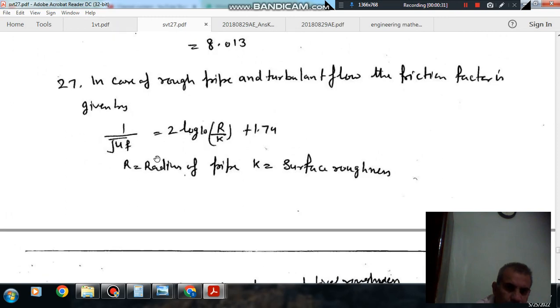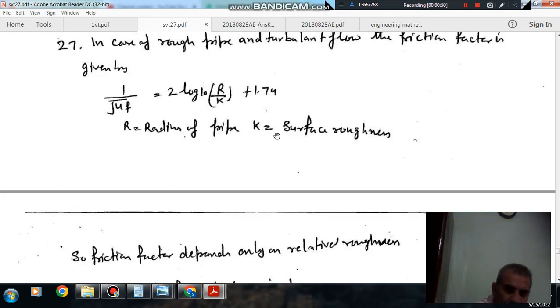So here for the rough pipe, the coefficient of friction is determined by like this: 1 by √4F is equal to 2 log₁₀ R by K plus 1.74. R is radius of pipe and K is the coefficient. So this friction factor depends on relative roughness.